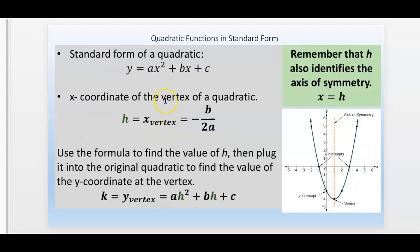Then, once you find that, you take that value and plug it into the original equation. So basically it becomes ah² + bh + c. Plug it back in and find out what the y-value is at the vertex. That's k.